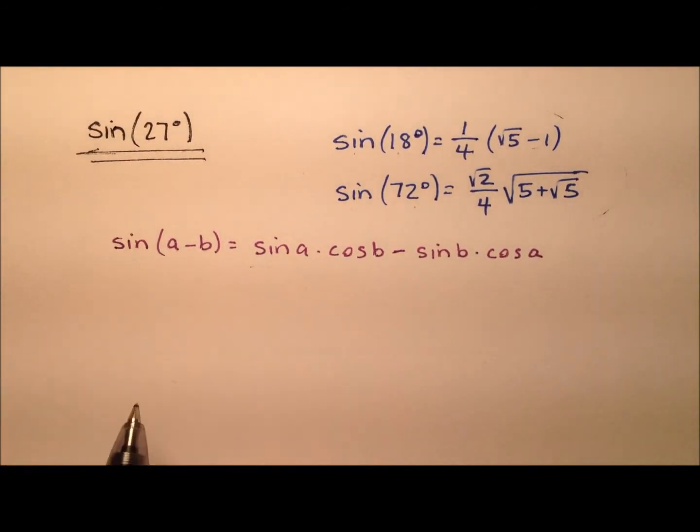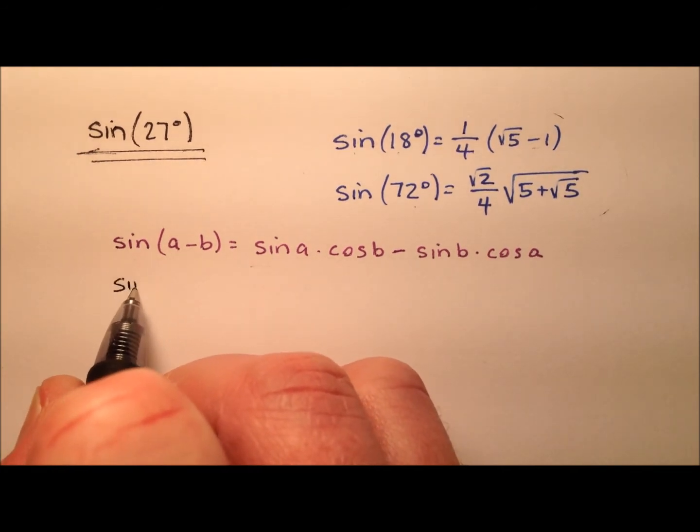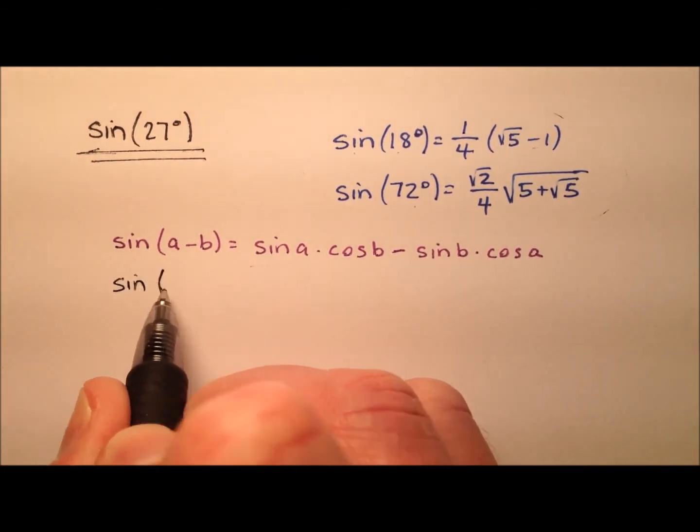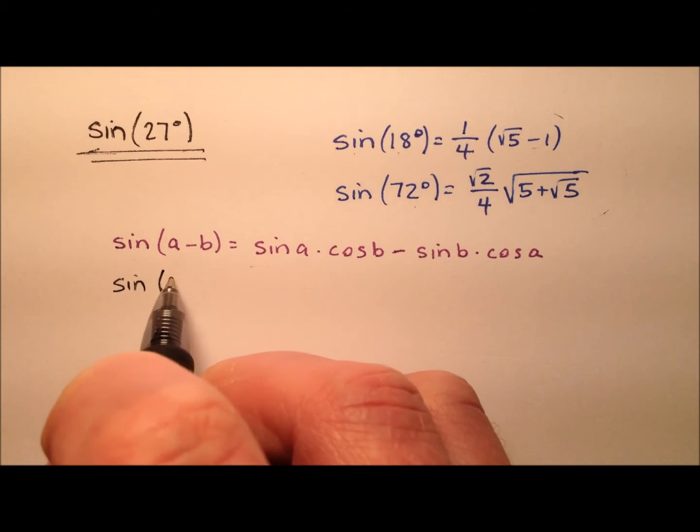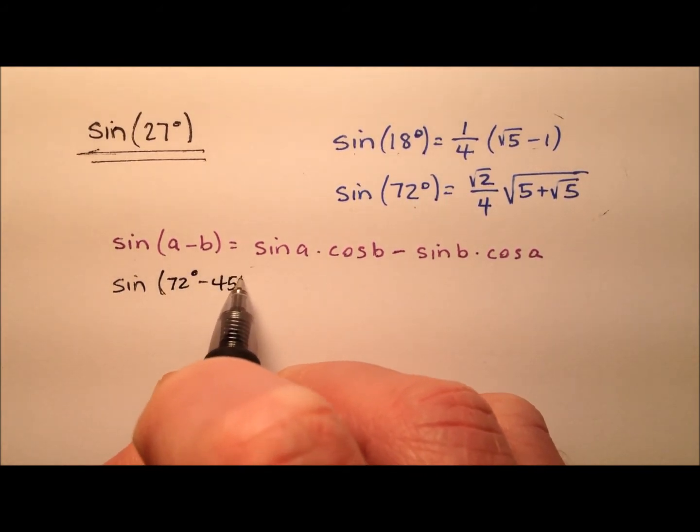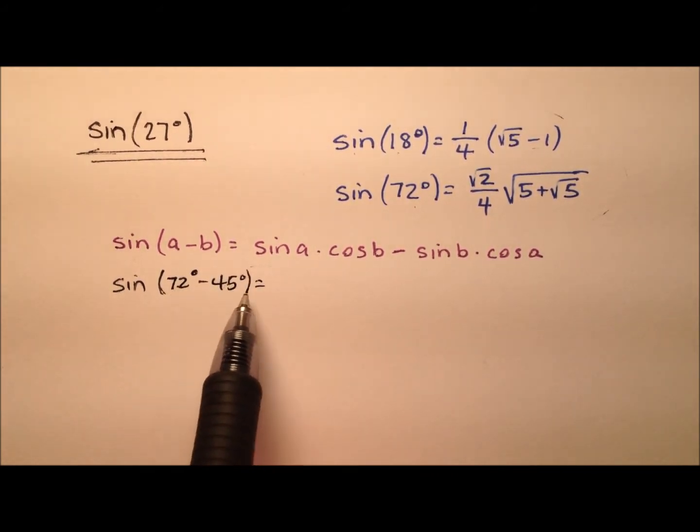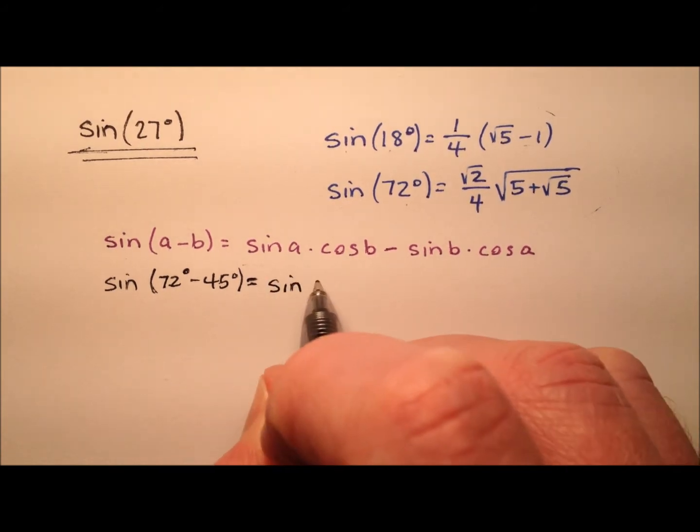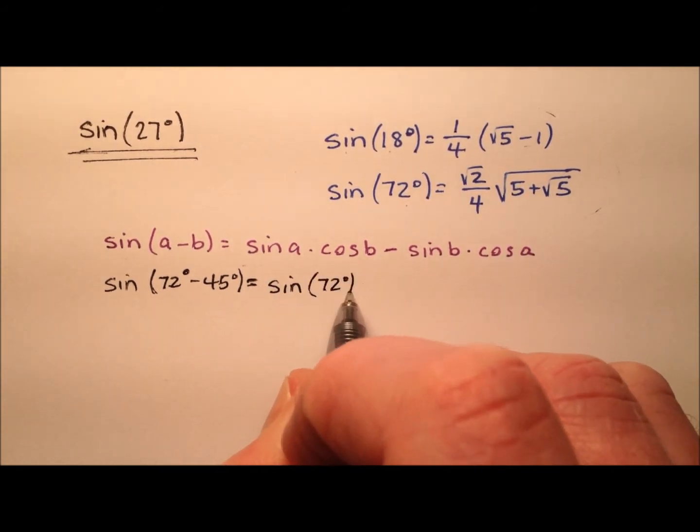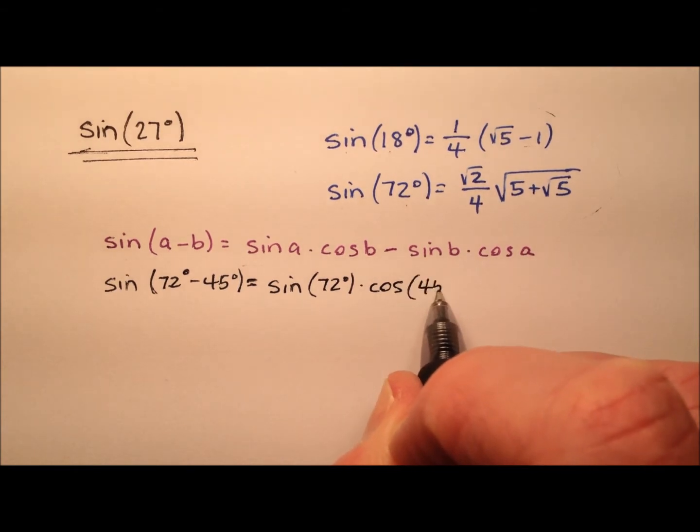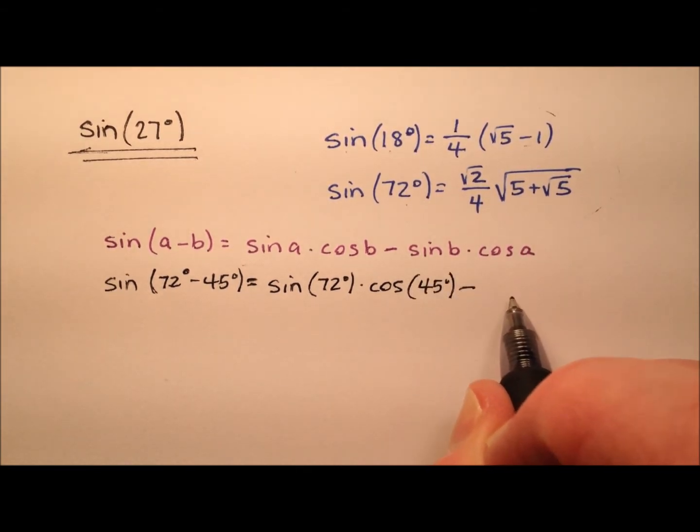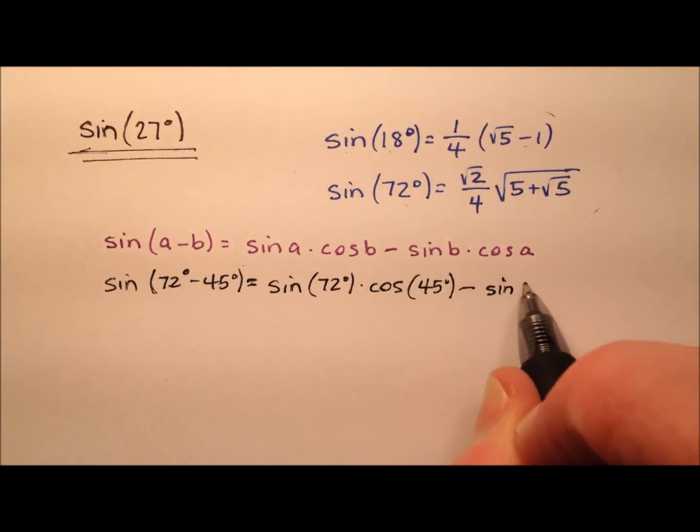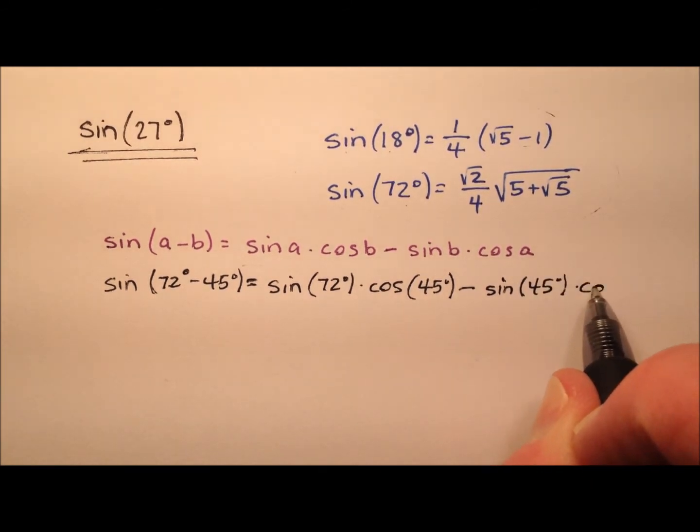So let's go ahead and do this as sine of 27. I'm going to write this with my a and b values as 72 degrees and 45 degrees, because 72 minus 45 is my 27 degrees. So I'm going to use this expansion. It's the sine of 72 degrees times the cosine of 45 degrees minus the sine of 45 degrees times the cosine of 72 degrees.